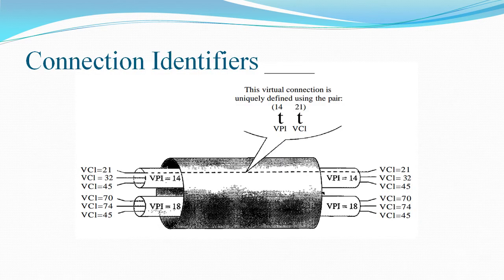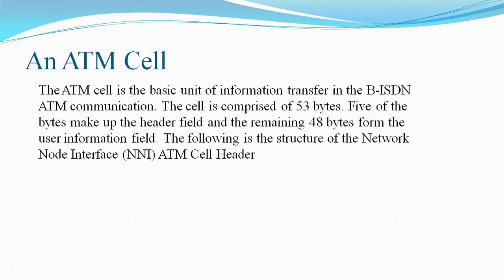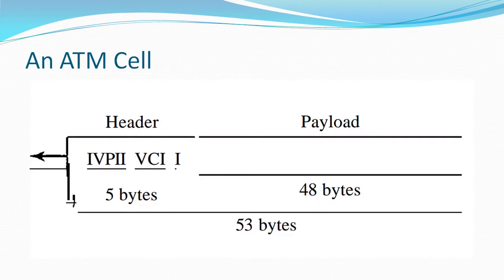ATM cell structure. In ATM, a permanent virtual connection is established between two endpoints by the network provider. The VPIs and VCIs are defined for the permanent connection and the values are entered into the tables of each switch. In switched virtual circuit connections, each time an endpoint wants to make a connection with another endpoint, a new virtual circuit must be established. ATM cannot do the job by itself but needs a network layer address and the service of another protocol. The actual mechanism depends on the network layer protocol.